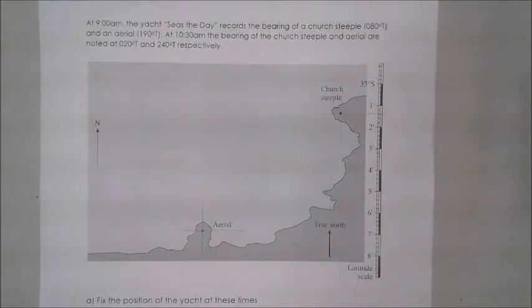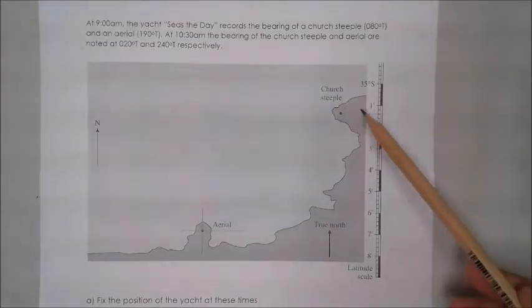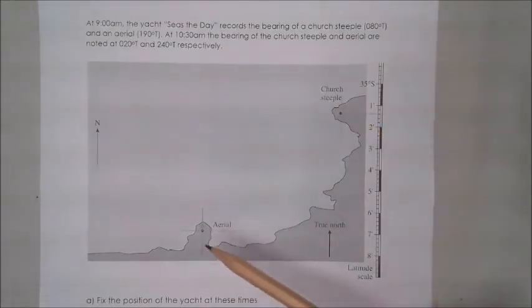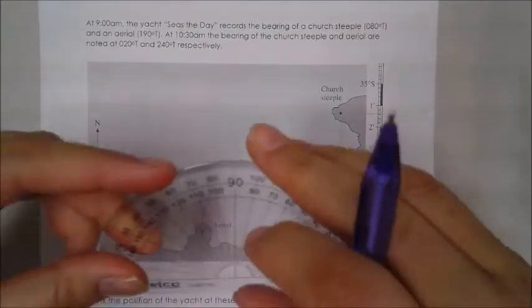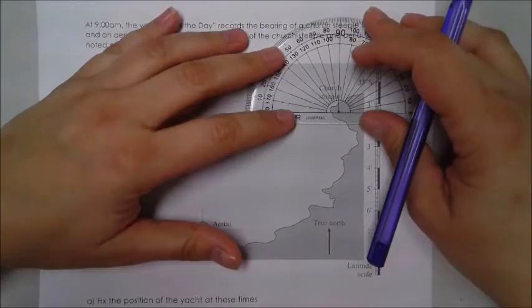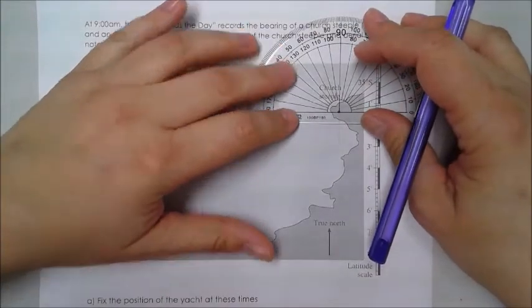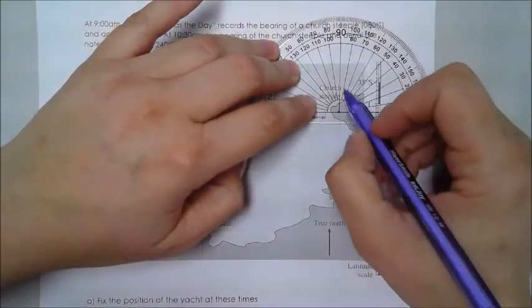So the first thing you do, notice that I have very lightly in pencil drawn a compass at each point. This helps me be a lot more accurate when using my protractor to mark these bearings in. I'm going to use pen in this so you can see the different lines, however I recommend especially in the beginning that you use pencil.